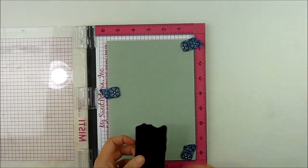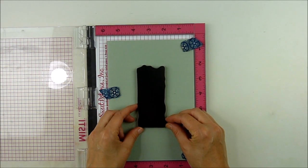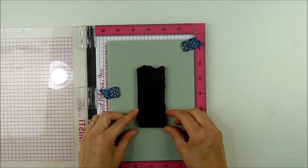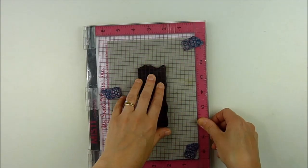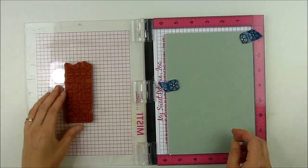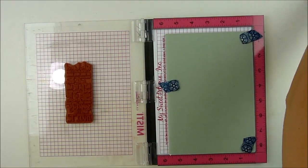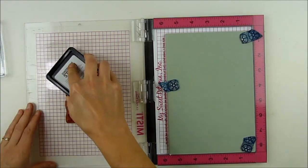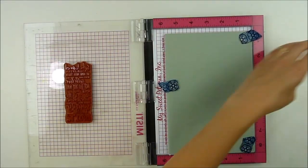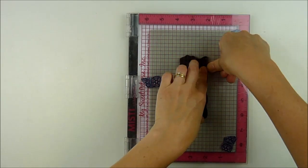I'm going to heat emboss my sentiment on the front. There's a little bit of texture to this, so I wanted to make sure I could stamp it multiple times and get a good clear impression. I went ahead and used my embossing buddy to make sure that none of my embossing powder would stick onto the front of my journal except just where I've stamped my sentiment.